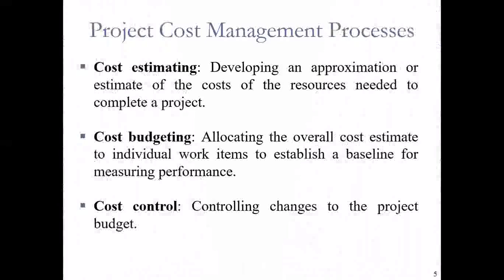Now let's look at the project cost management process. The first one is cost estimating — developing an approximation or estimate of the cost of the resources needed to complete the project. Then there's cost budgeting — allocating the overall cost estimate to individual work items to establish a baseline for measuring performance. There's also cost control, which is controlling the changes to the project budget. As you start doing the work, there will be some changes, but you must be able to manage those changes. Remember: cost estimating, cost budgeting, and cost control.